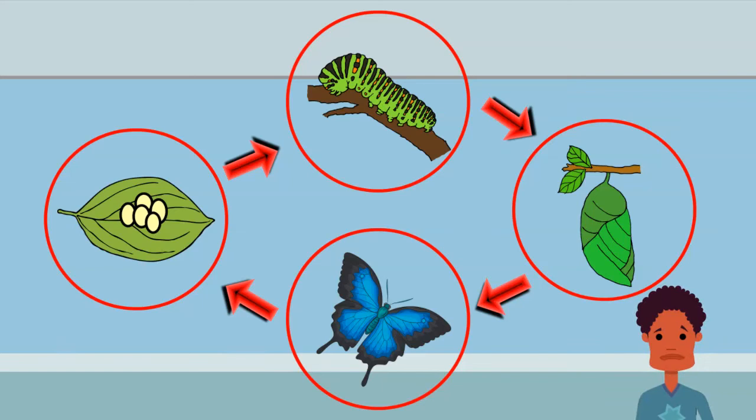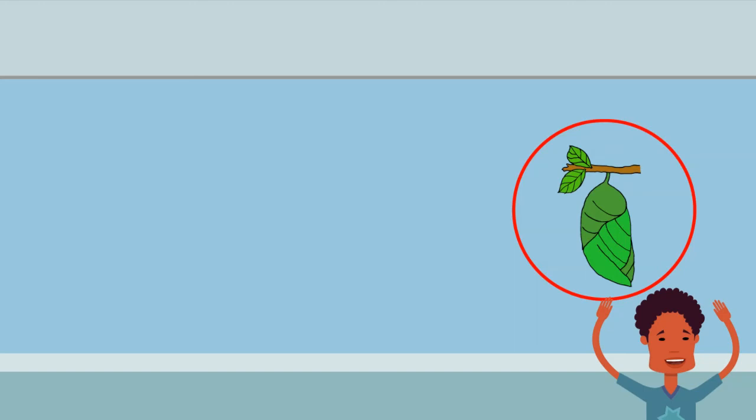Where does the caterpillar turn into a butterfly? A caterpillar turns into a butterfly inside of the pupa or chrysalis.